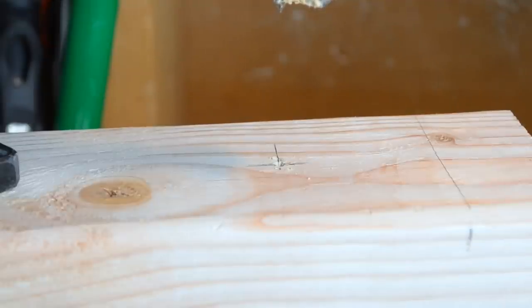In order to recess the bolt that I'm going to be using for the legs, I'm going to be using a one and three-eighths inch Forstner bit, which will also help give me a pilot hole for drilling the rest of the bolt through.